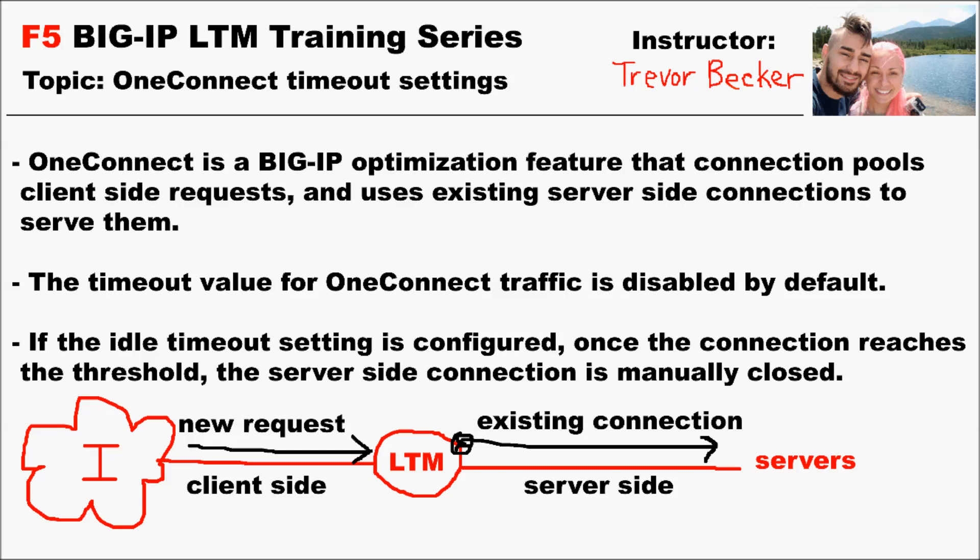The OneConnect timeout setting is user configurable. Whenever a server-side connection is inactive and reaches the OneConnect timeout value threshold, the BigIP will close that server-side connection down. This will not affect any client-side connections, however, since the server-side connection was inactive.